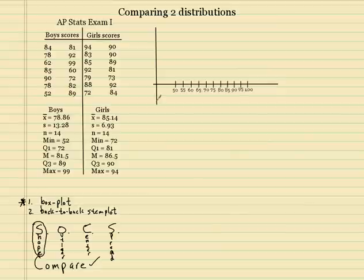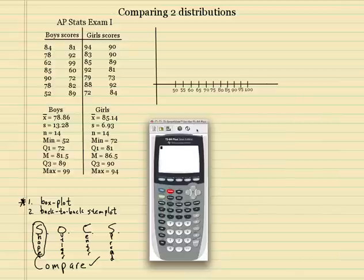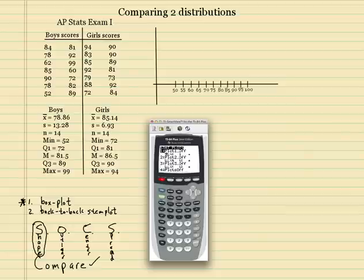So let's go ahead and get started. The first thing we always, always do is make a graph. I'm going to go ahead and pull out the calculator here and show you how to make two box plots on the same screen. And then we're going to do it by hand up here on the graph.